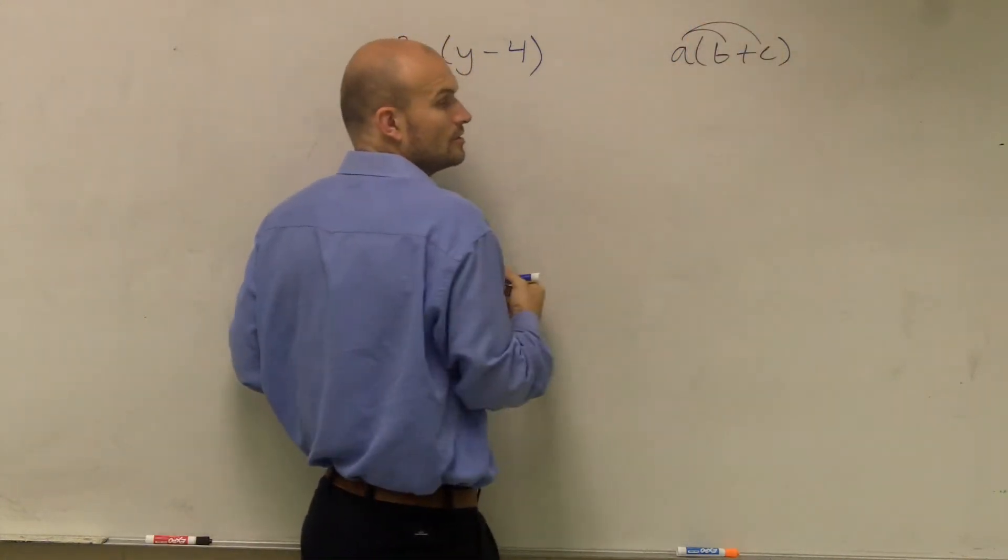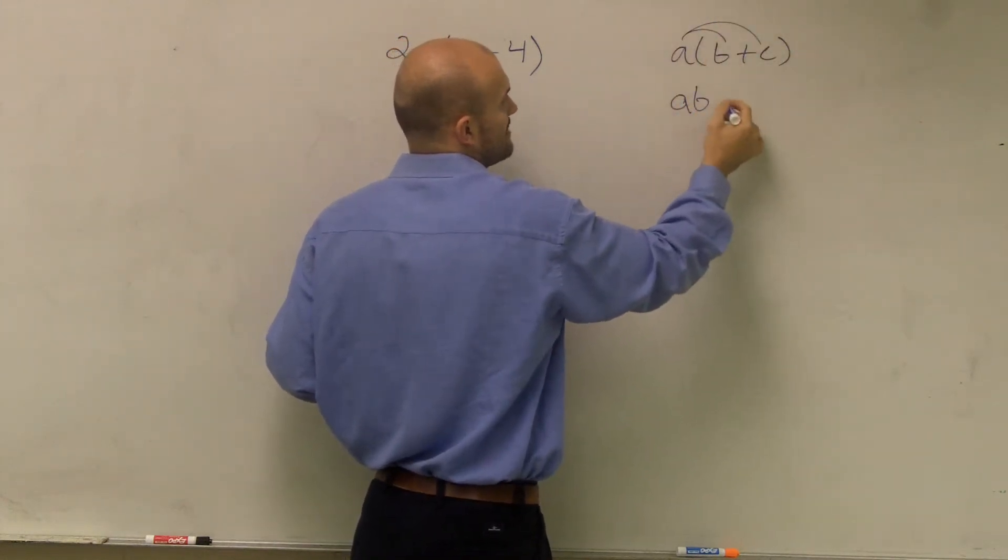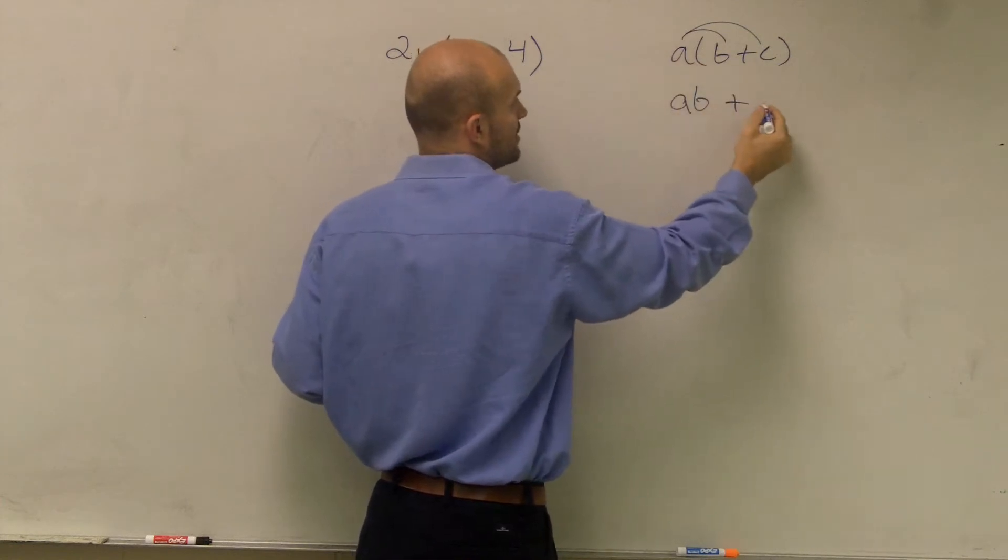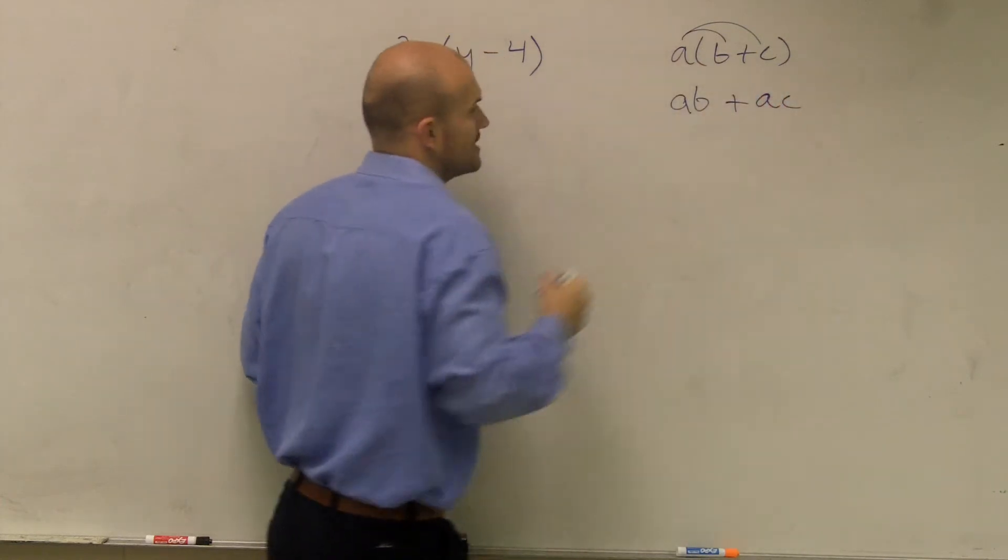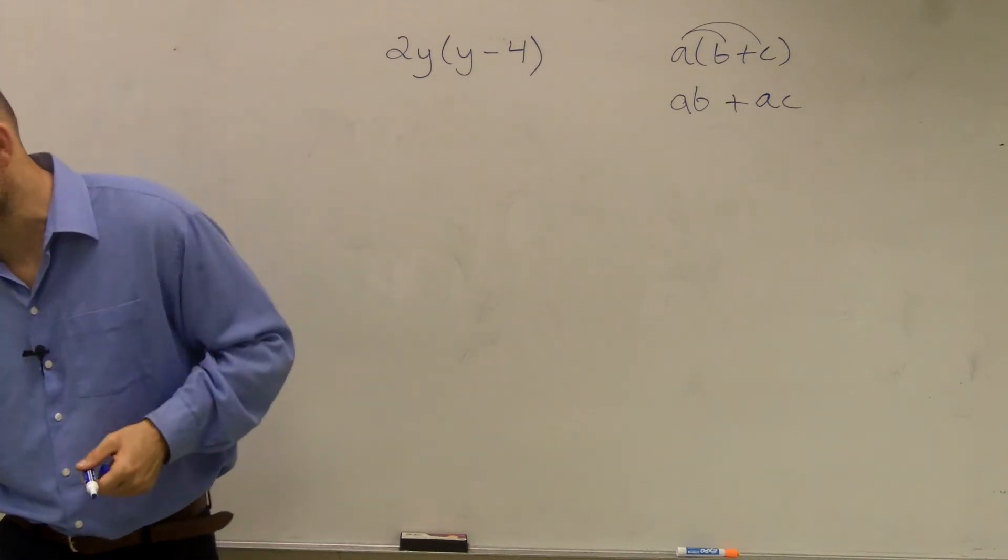So what we like to do is write these little lines here to represent that's going to be A times B, and since that's a positive A, plus A times C. So that's something you guys are going to want to have written down and understand so you can use.